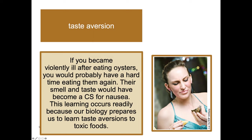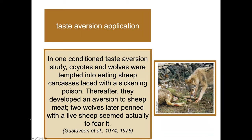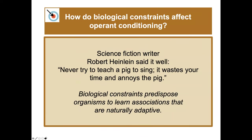In one taste aversion application study, coyotes and wolves were tempted into eating sheep carcasses laced with a sickening poison. After that, they developed an aversion to sheep meat. Two wolves later penned with a live sheep seemed to actually fear it — an interesting practical application of taste aversion for farmers.